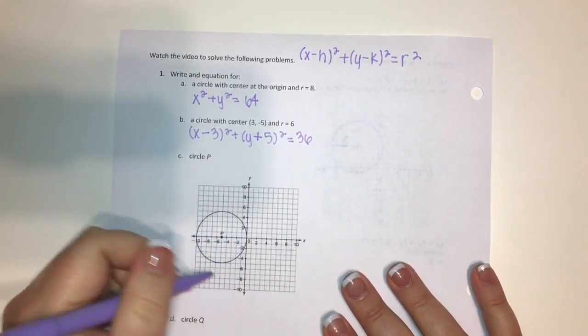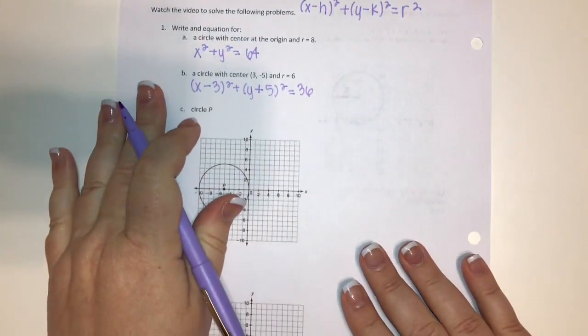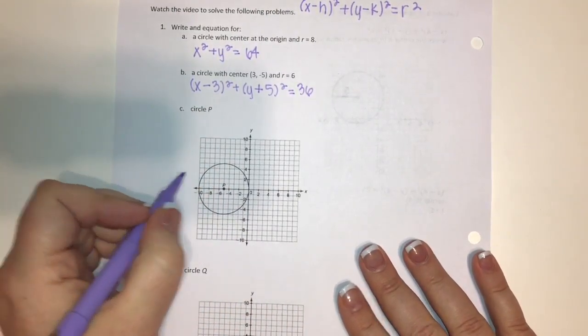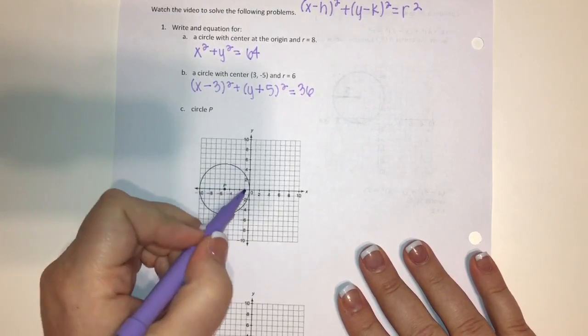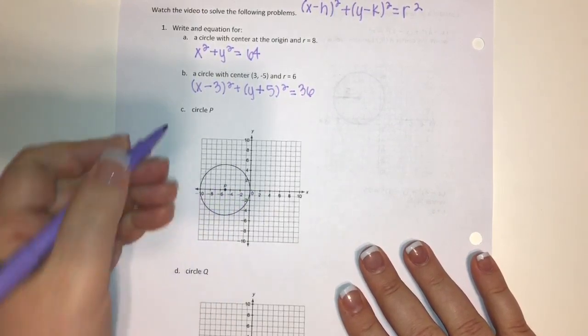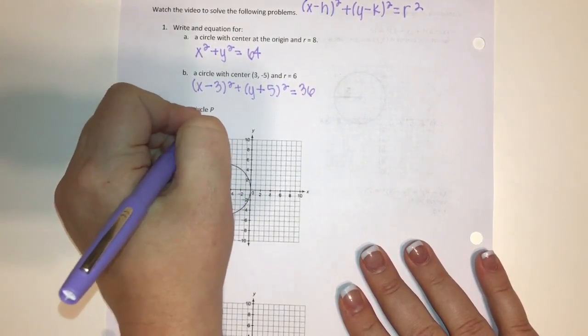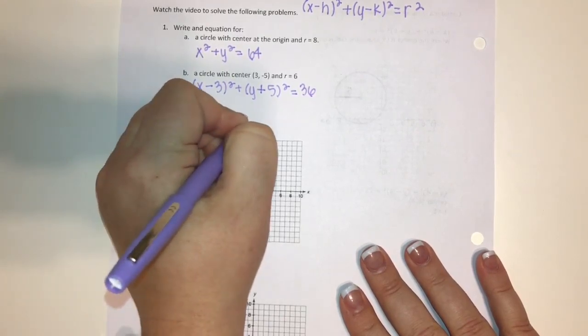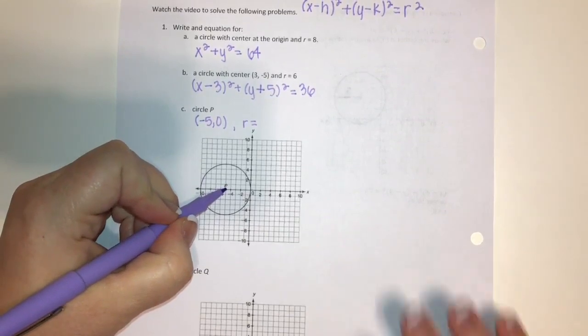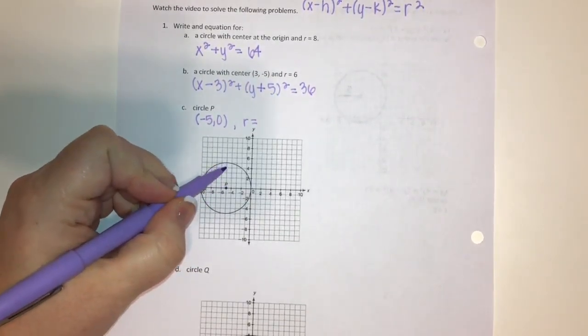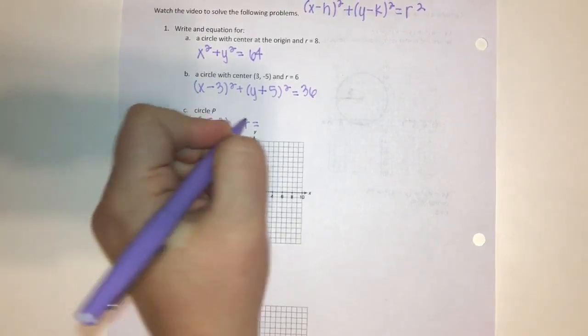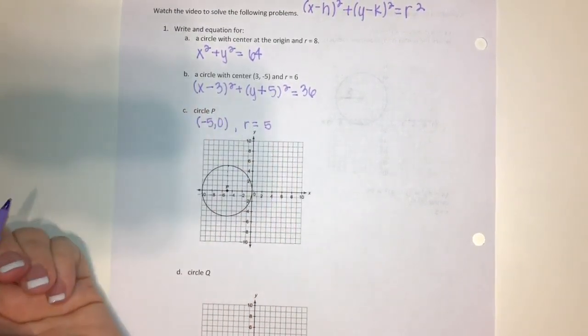Now here they don't give me any information—I have to come up with that from the coordinate plane. I can find my center; it looks like it's (-5, 0), so I'm just going to jot that down. Then I want to find my radius, so I'm going to pick the center and count up till I hit the circle: one, two, three, four, five. So my radius is 5.